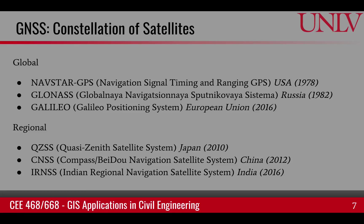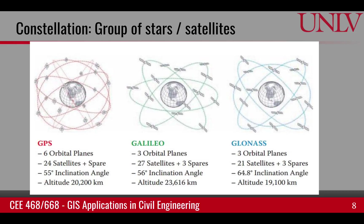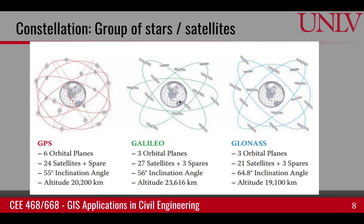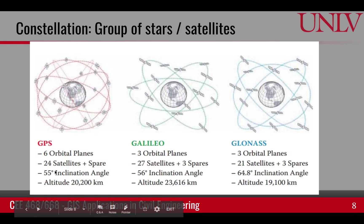All of these are constellations of satellites in space, continuously broadcasting their signals. If you have a radio receiver that can pick up their signal, you can tune it to that constellation, and based upon the signals from those satellites, determine the position of that radio receiver. A constellation is a group of stars — and in this case, a group of satellites.